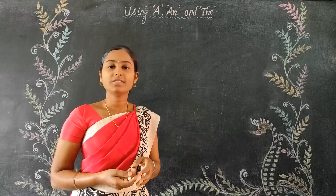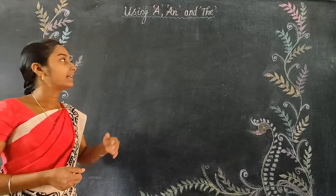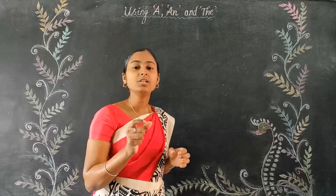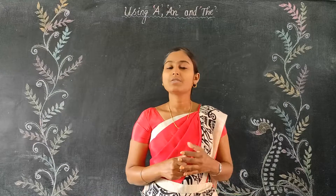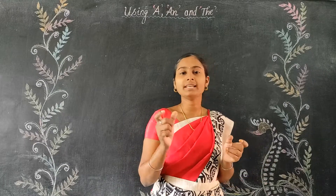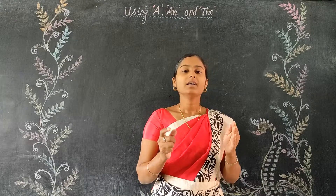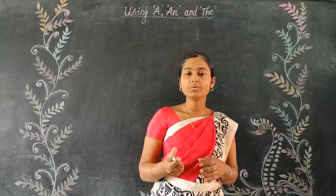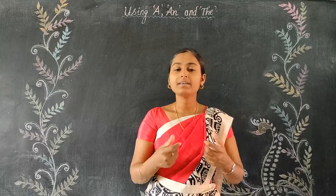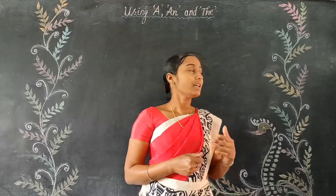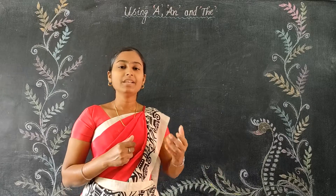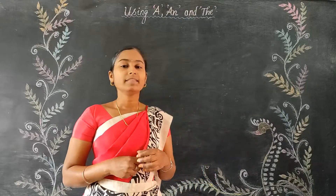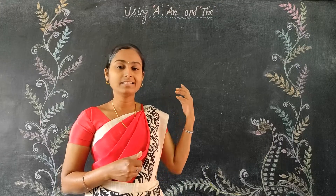Before we get into this topic, let us recall what we have learnt in our previous video. The first thing: we use 'a' before singular words that begin with a consonant sound. We use 'an' when the word expresses a singular thing and begins with a vowel sound. And we use 'the' when a noun is already introduced.